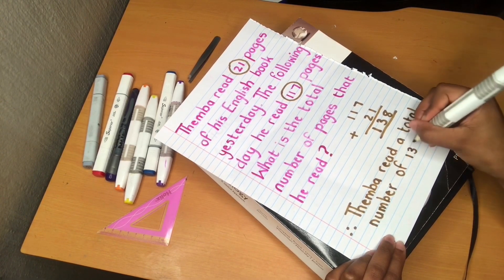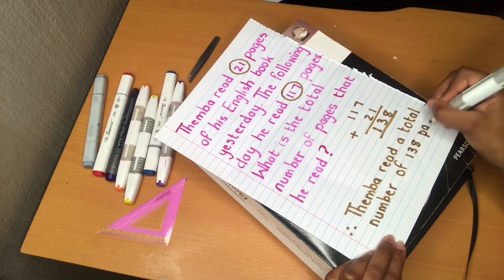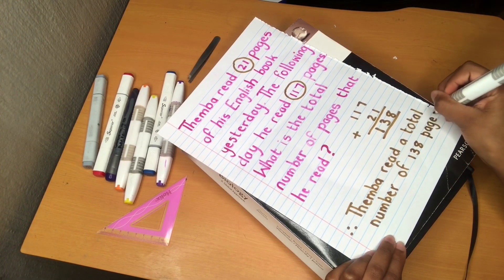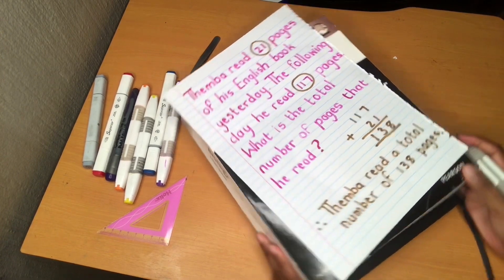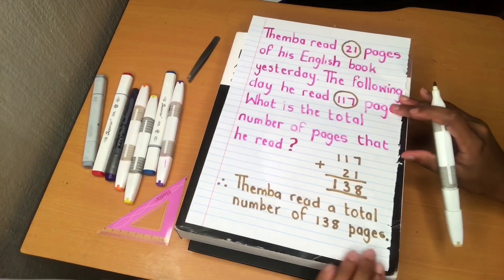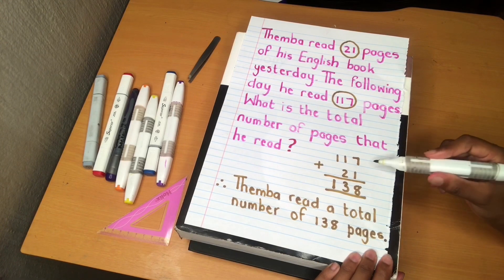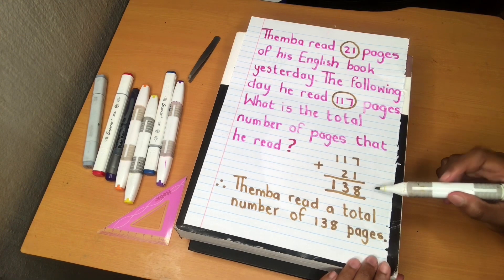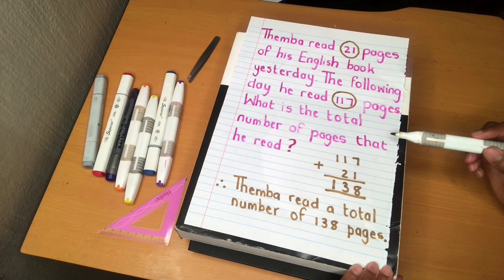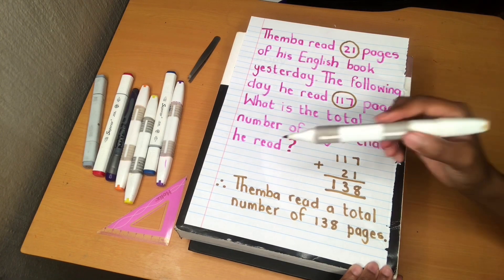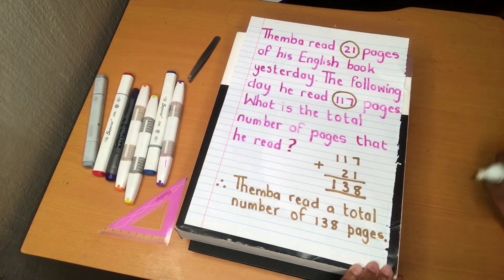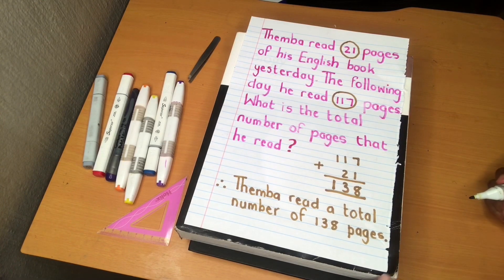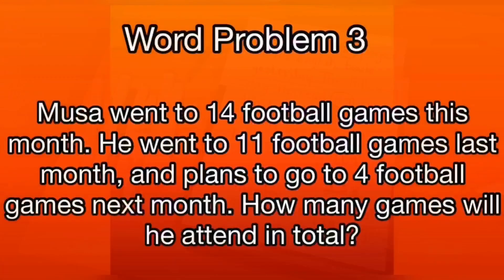We have our sum here — 117 plus 21 gives us the final answer of 138. Then we have our sentence which answers the word problem: 'What is the total number of pages that he read?' Tamba read a total number of 138 pages.